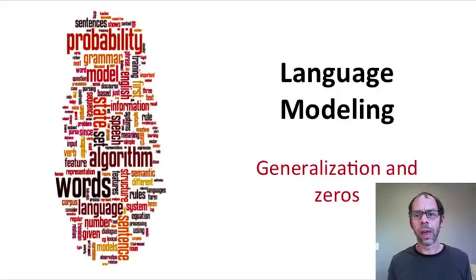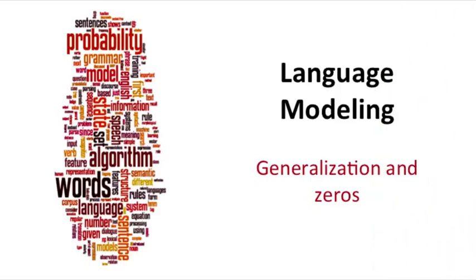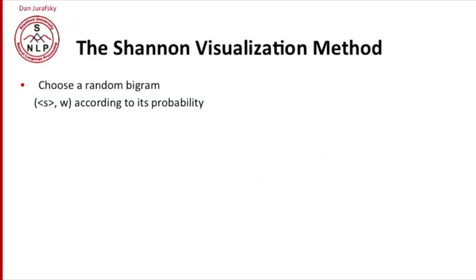We saw earlier that lots of times probabilities or counts of bigrams or trigrams would be zero. What do we do in these cases? Let's think about this by starting with what's called the Shannon visualization method.